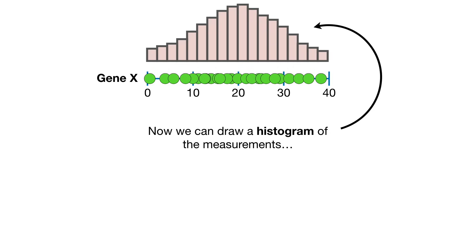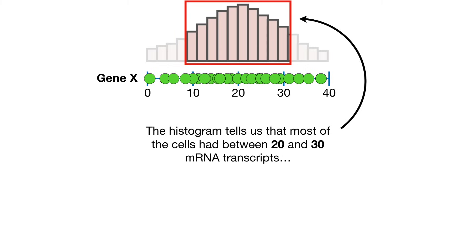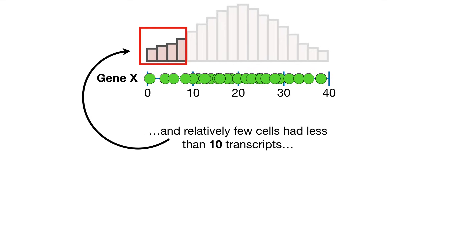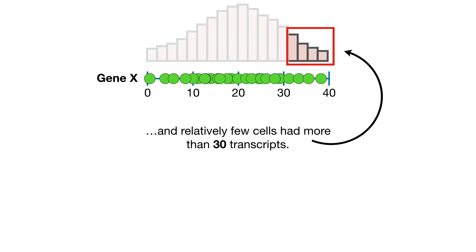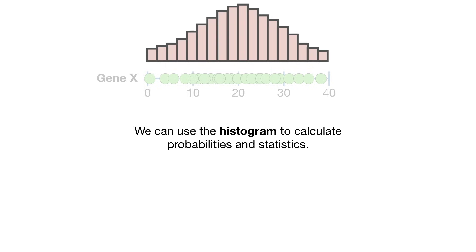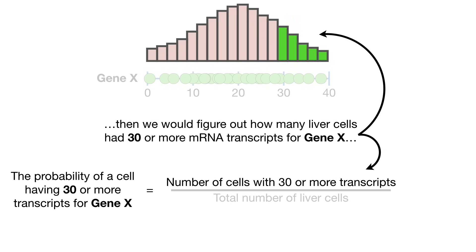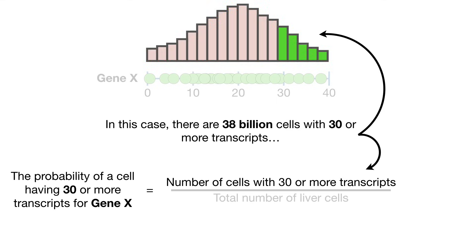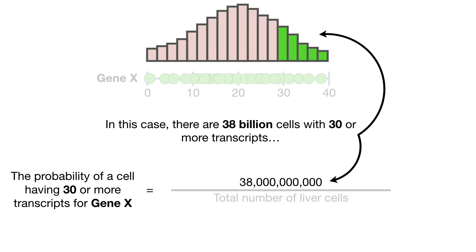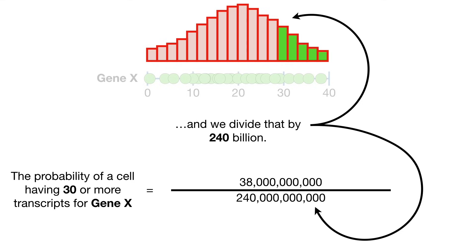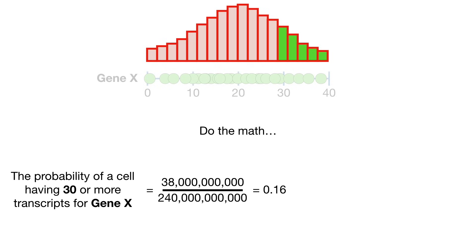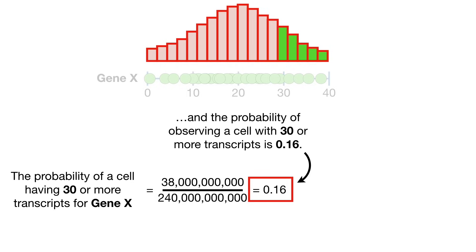Now, we can draw a histogram of the measurements. The histogram tells us that most of the cells had between 20 and 30 mRNA transcripts, relatively few cells had less than 10 transcripts, and relatively few cells had more than 30 transcripts. We can use the histogram to calculate probabilities and statistics. For example, if we wanted to know the probability of observing a liver cell with 30 or more mRNA transcripts for gene X, then we would figure out how many liver cells had 30 or more transcripts and divide by the total number of liver cells. In this case, there are 38 billion cells with 30 or more transcripts, and we divide that by 240 billion. The probability of observing a cell with 30 or more transcripts is 0.16.